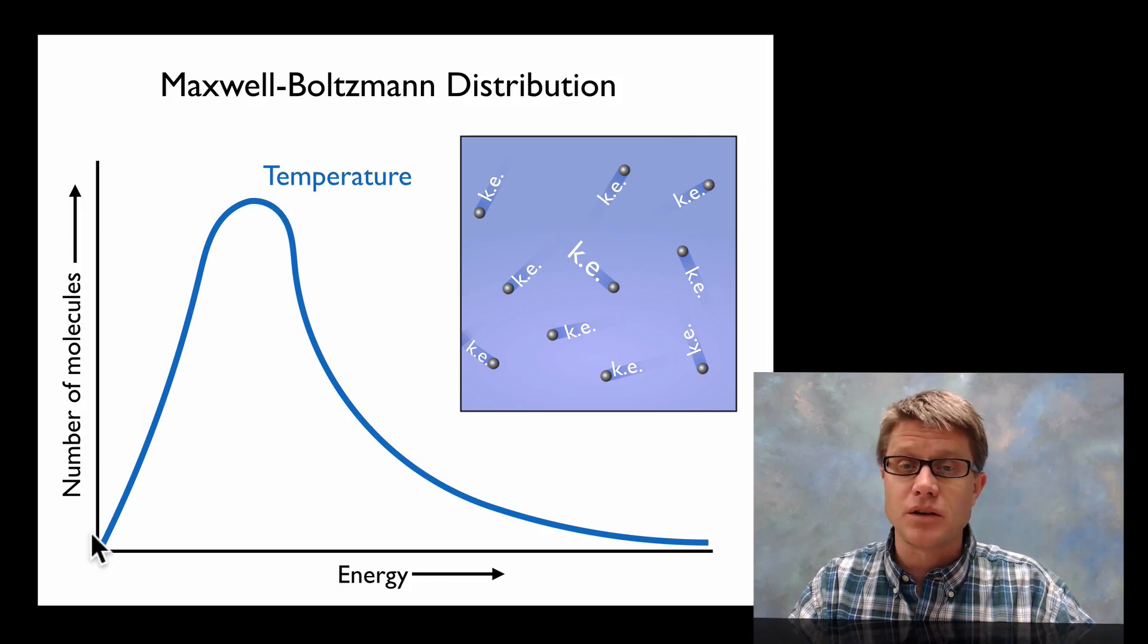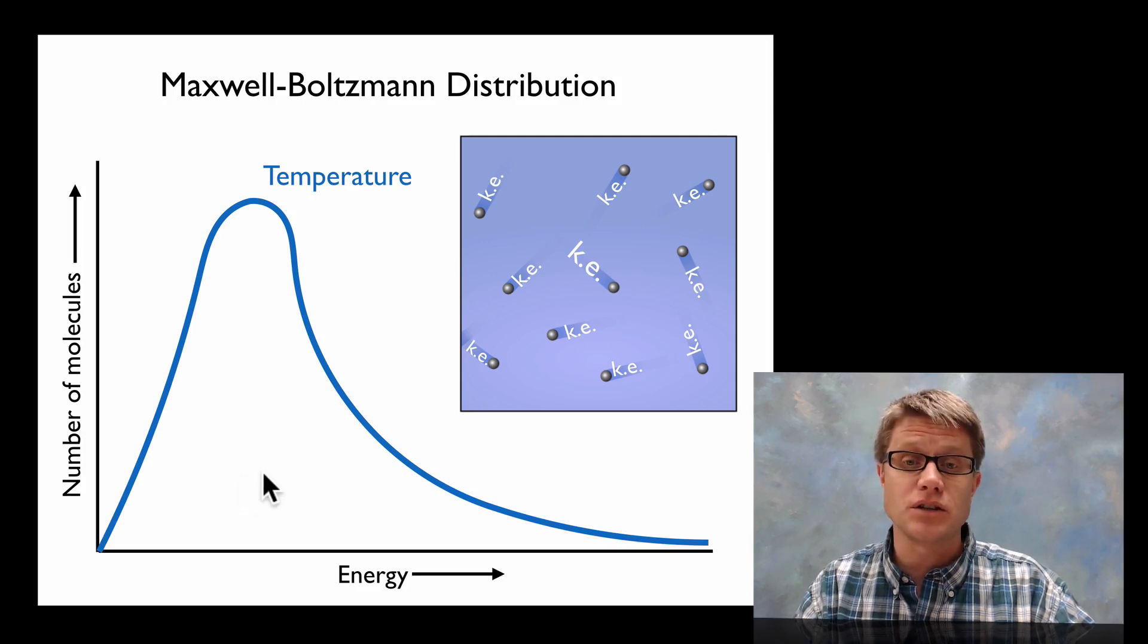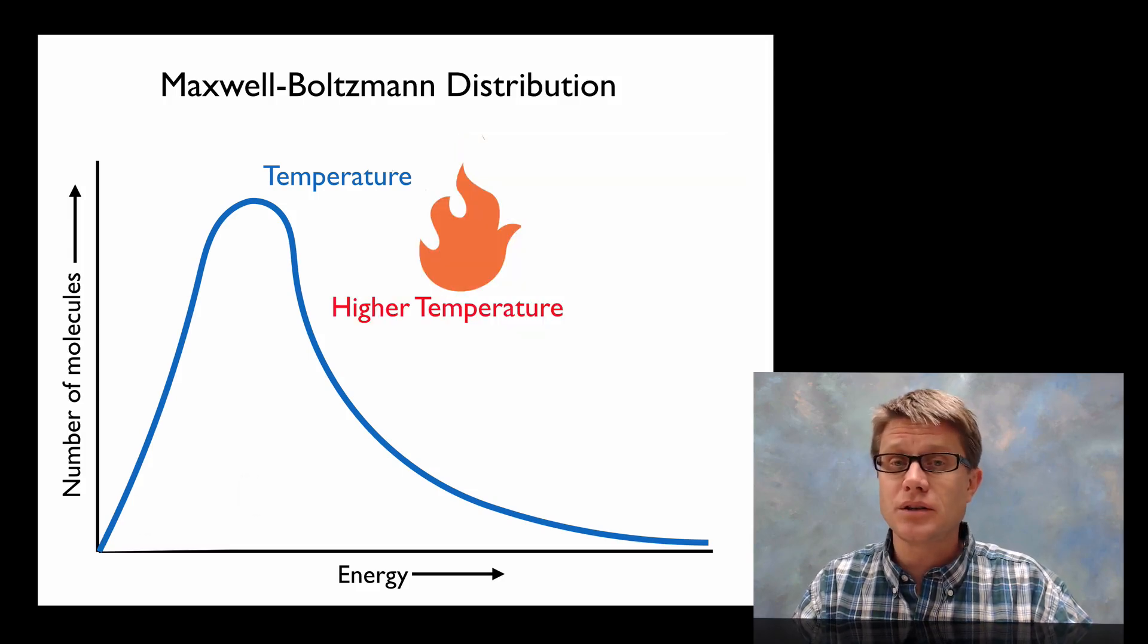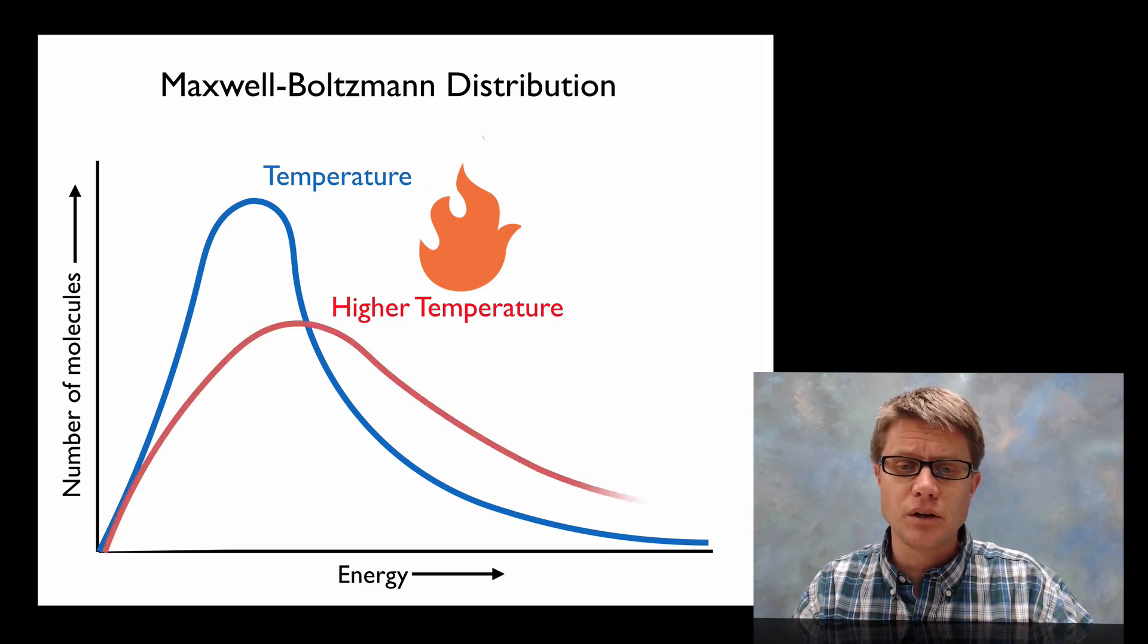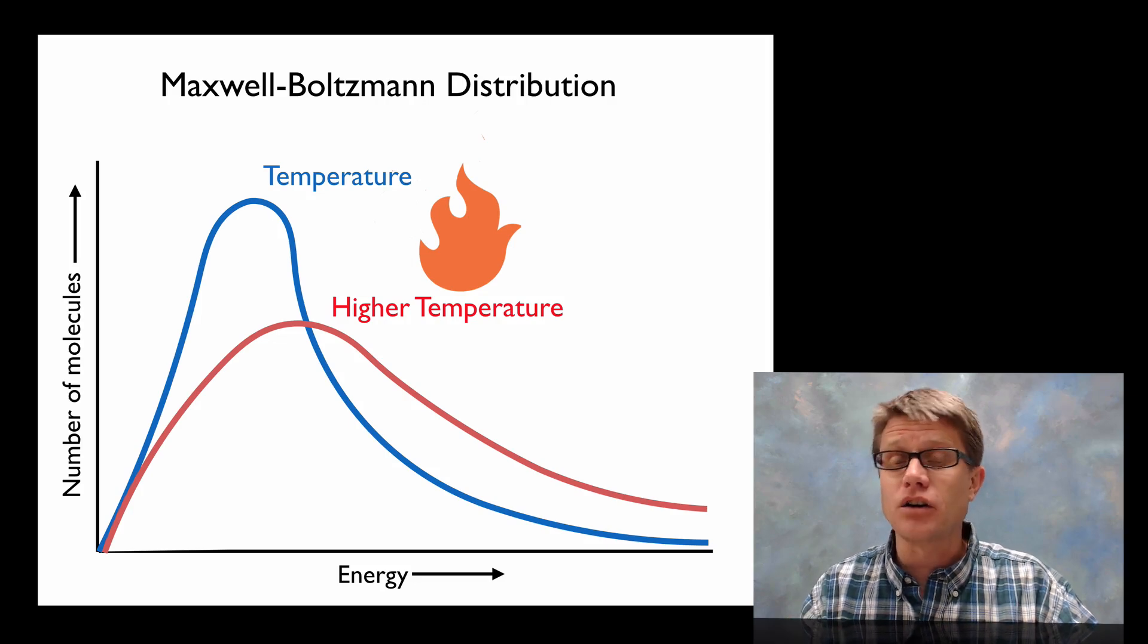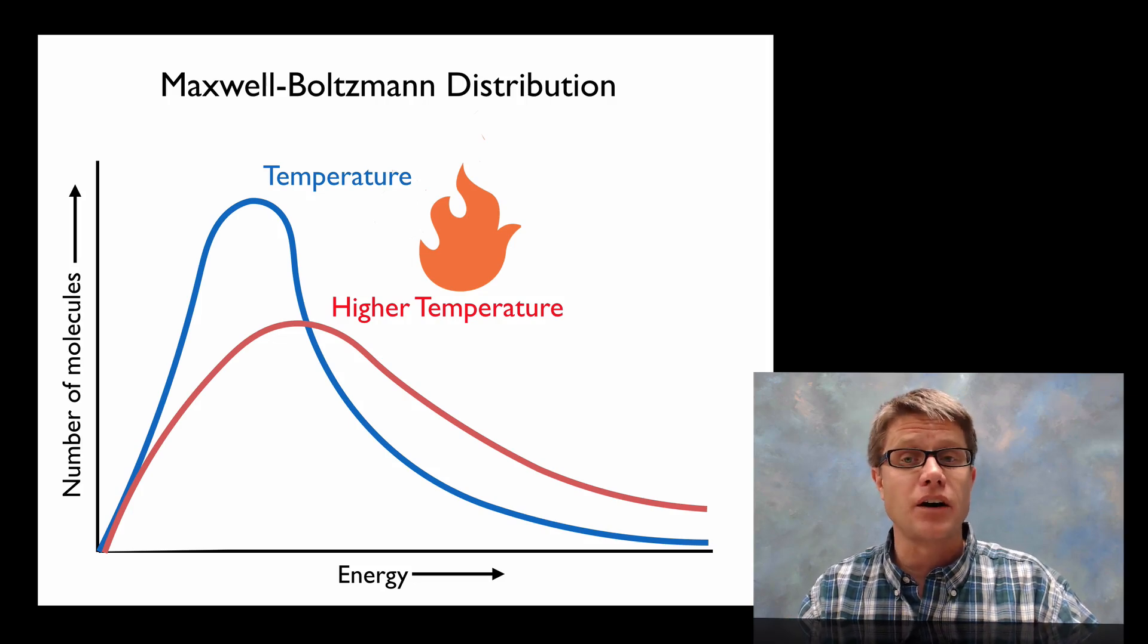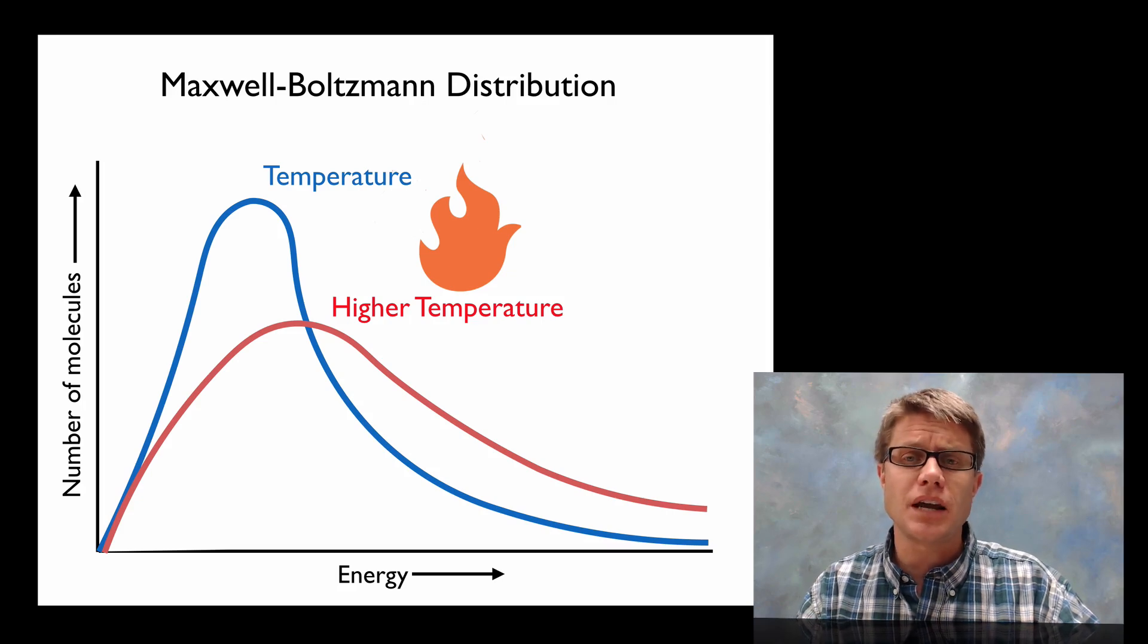But there are going to be a lot of particles that have a slower than average speed and a lot that have a higher than average speed. And so if we were to increase the temperature, what's that going to do to the Maxwell-Boltzmann distribution? It's going to look more like that. In other words we're going to have more particles that are going to have higher amounts of speed. Therefore a higher amount of temperature. And we'll talk about heat and heat transfer in the next video.